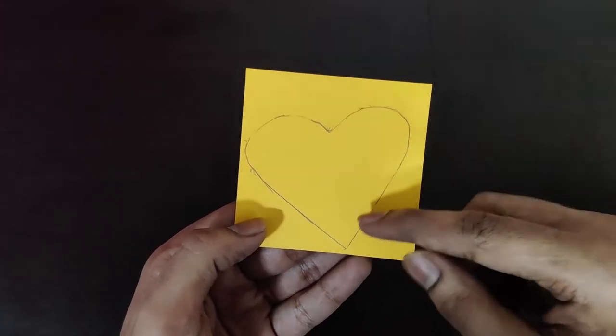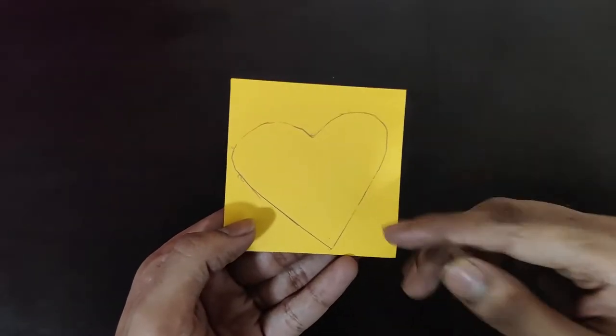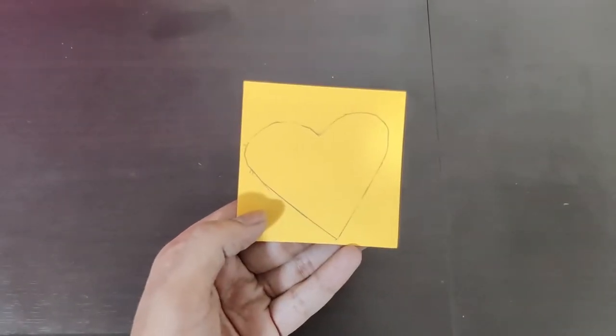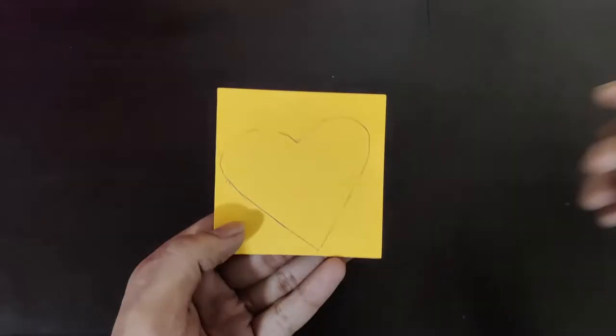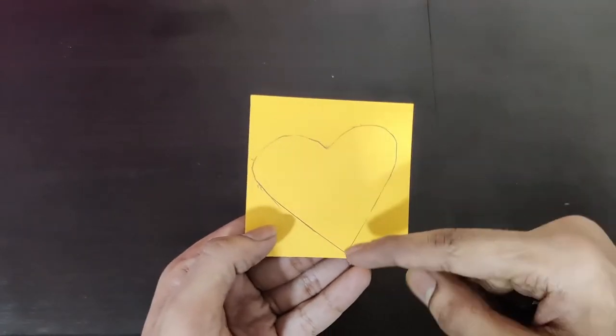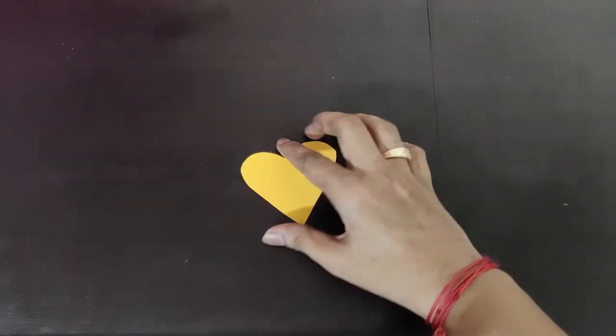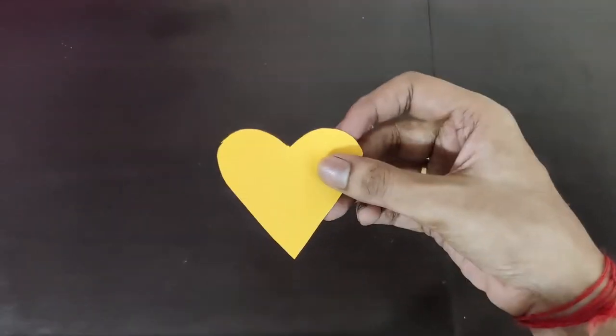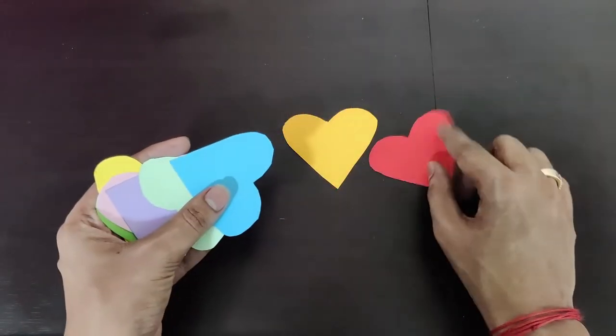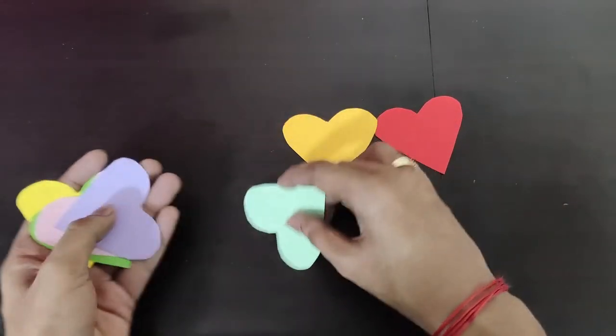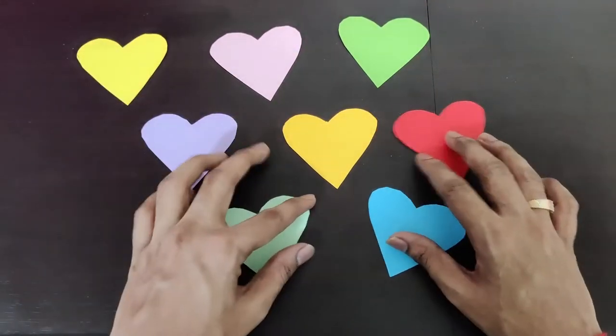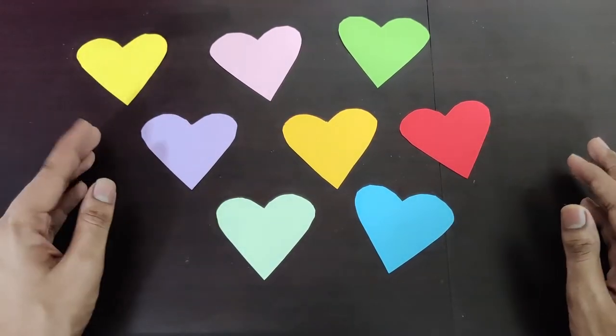You need to draw a heart shape like this. We need to cut this and we need such multiple cutouts of different heart shapes of different colors. As you can see I've cut the heart shape and we need such similar hearts of different colors which I've already cut. I have eight here so you can make as many as you want and the card will be of that length based on the sizes.